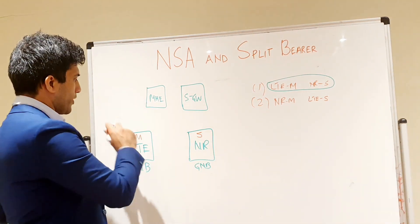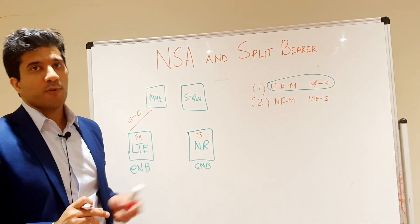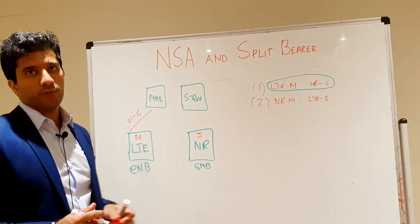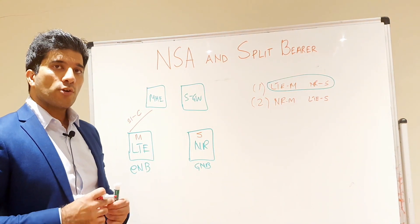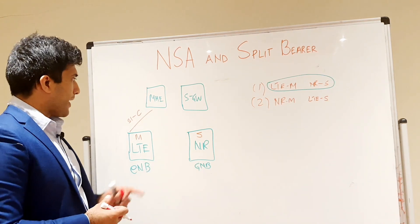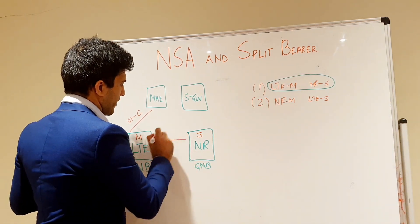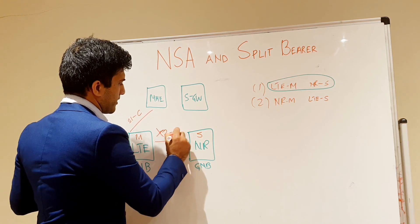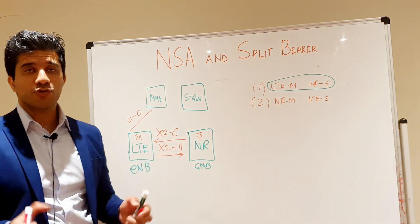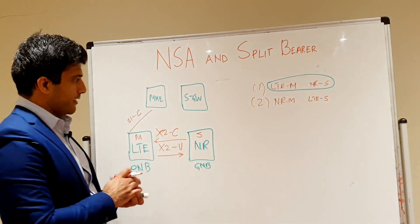The LTE master node will have the S1 control plane connection with the MME. All control signaling and RRC setup will be done with this LTE node — that is why it is the master node and is known as the anchor. The LTE node will then add the NR node. For that we have an X2 control plane and an X2 user plane interface which exists between these two nodes.